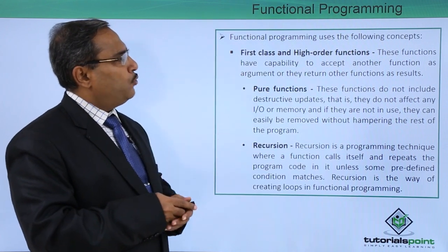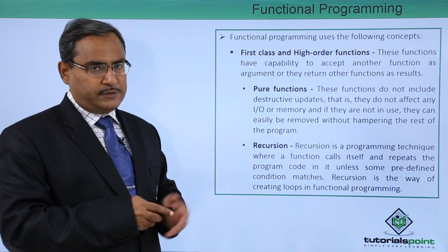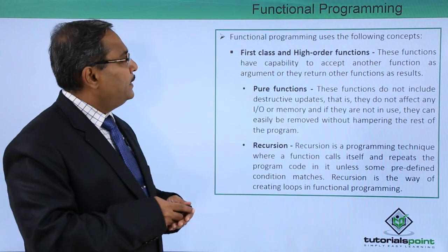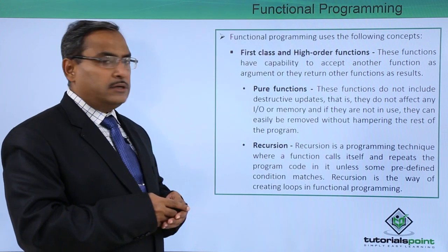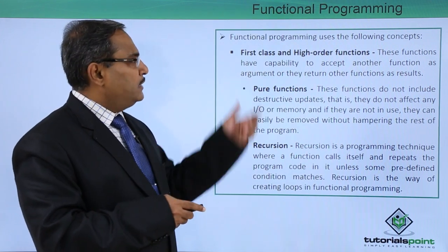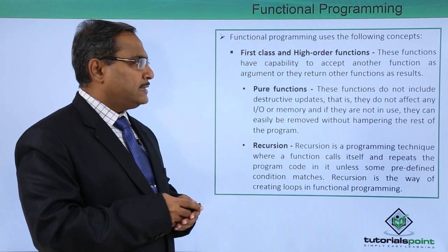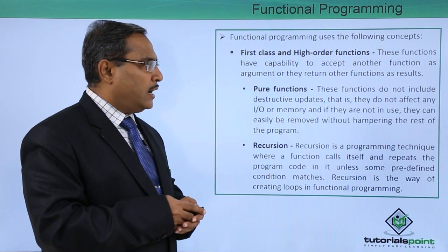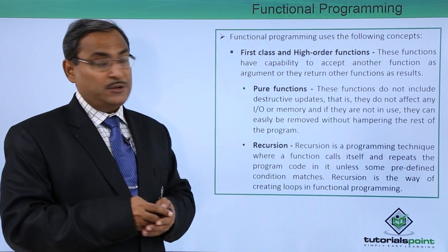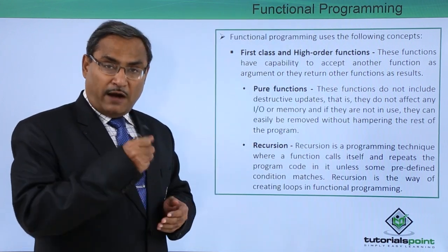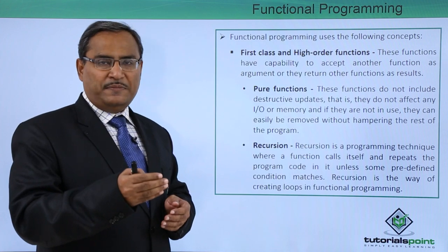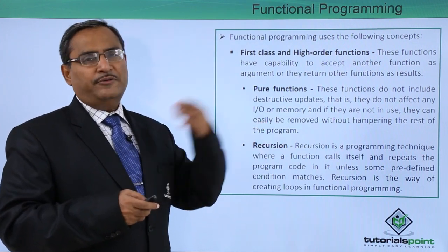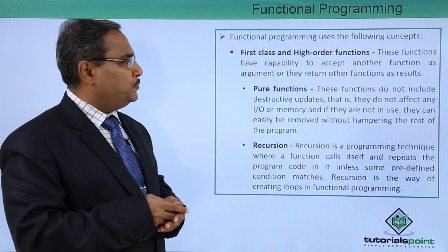Functional programming uses the following concepts. The first is first class and higher order functions. These functions have the capability to accept another function as an argument, or they return other functions as a result. So a function can take another function name as an input argument, and as a result, one function can also return another function as output.